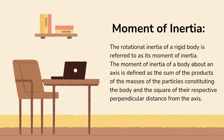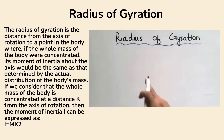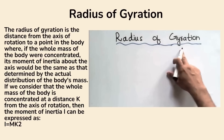Next is moment of inertia. The rotational inertia of a rigid body is referred to as its moment of inertia. The moment of inertia of a body about an axis is defined as the sum of the products of the masses of the particles constituting the body and the square of their respective perpendicular distances from the axis. Moving forward with radius of gyration.